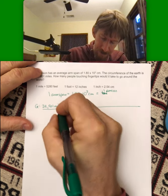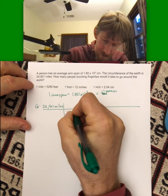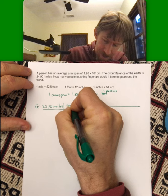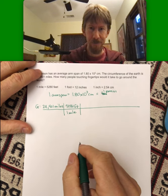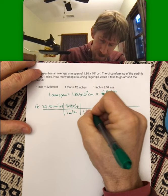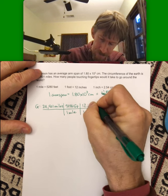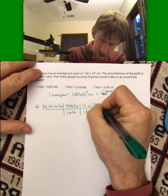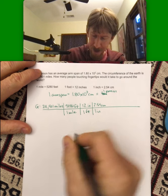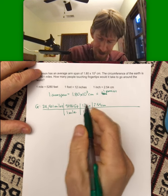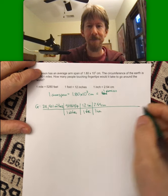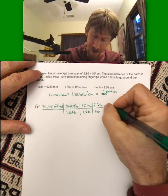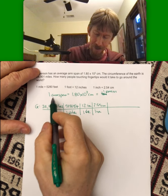One mile is 5,280 feet. Any two things that are equal to each other can be put above and below each other in a unit conversion problem. Then one foot is 12 inches, one inch is 2.54 centimeters. I'm doing this to make sure that all my units cancel out.